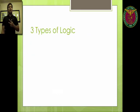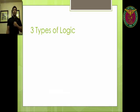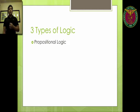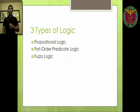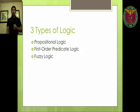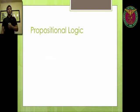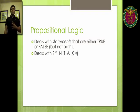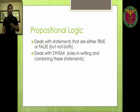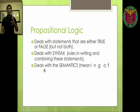So there are three types of logic, two of which will be discussed in this course. The first one is propositional logic, which is our topic for this session. The second is first order predicate logic, which is in the second module. And third is fuzzy logic, which unfortunately we will not be talking about — it's a topic of some other computer science or logic course. So what is propositional logic? Propositional logic deals with statements that are either true or false, but not both. It also deals with syntax, which is defined as rules in writing and combining these statements. It also deals with semantics, which is the meaning of these statements.